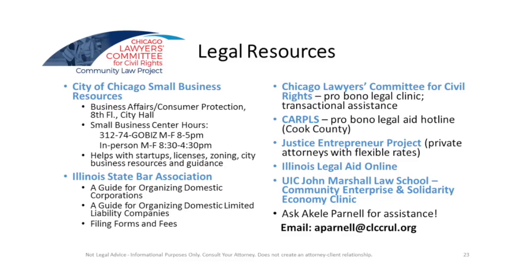The Illinois State Bar Association has some guides online. My organization, Chicago Lawyers' Committee for Civil Rights, has a small business program where we connect entrepreneurs with transactional legal services, either directly or through our pro bono partners where you can work with some of the best attorneys in the city. For certain qualifications, you need a business plan and income qualifications among other requirements. CARPLS is a great resource — it's a pro bono legal aid hotline. The Justice Entrepreneur Project has private attorneys who charge a reduced fee with great resources. Illinois Legal Aid Online is another one. And UIC John Marshall Law School has a Community Enterprise and Solidarity Economy Clinic — basically a business clinic for community enterprises and small businesses. If you need to be connected with legal assistance, we have a lot of different attorney and law firm partners that we work with, so those are always a resource we make available.